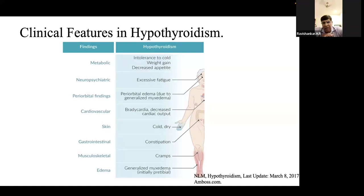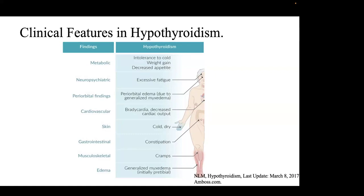Congenital hypothyroidism syndrome is called fetal iodine deficiency syndrome, caused by iodine deficiency in utero, seen in patients in iodine-insufficient areas. Other causes include thyroid aplasia or dysplasia, or transplacental transmission of maternal antithyroid antibodies.